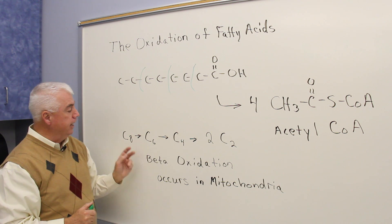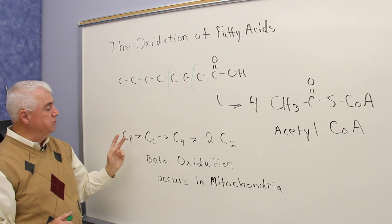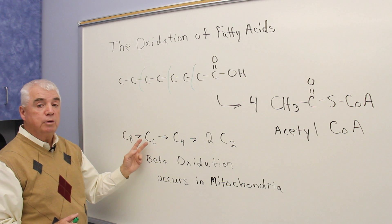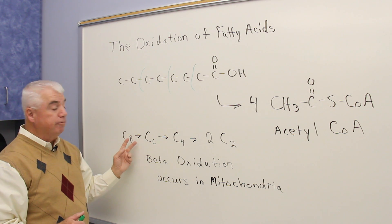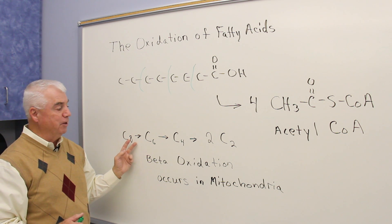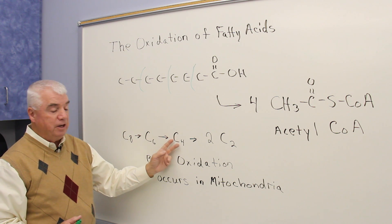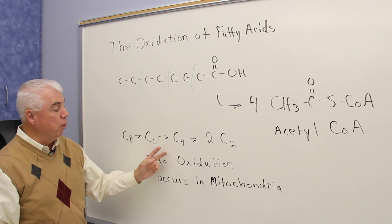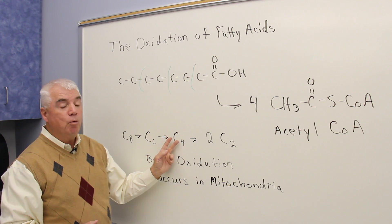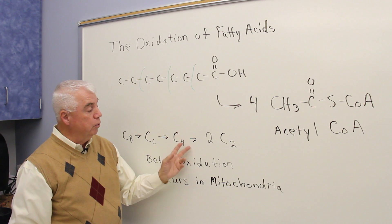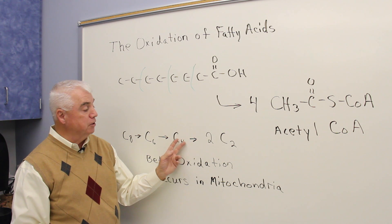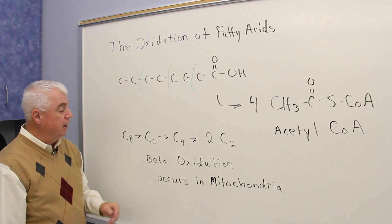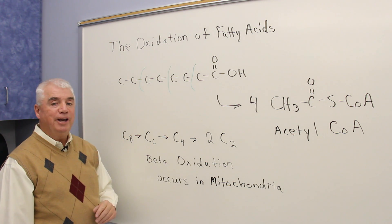Another way of looking at it: we're starting with the C8. After the first set of reactions we'd be down to a C6, and we would have produced a molecule of acetyl-CoA. C6, as it goes to C4, would again give us another unit of acetyl-CoA. And now C4 only has to go through this process of reactions once to give us two units of acetyl-CoA. This is called beta-oxidation.